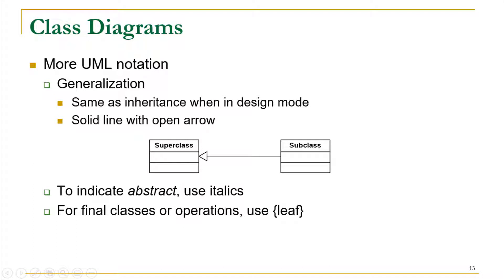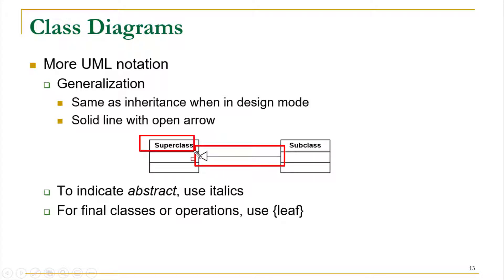With the help of class diagrams we can show the generalization relationship. To show the generalization relationship we use a similar arrow to the one used for inheritance: a solid line with an open arrow. The arrow always points towards the superclass while the subclass points towards the superclass. If any of your classes is abstract, you can use italics to represent that the name of the class is abstract.